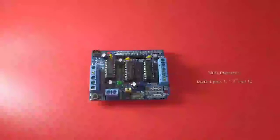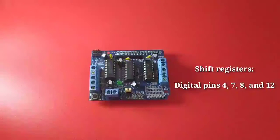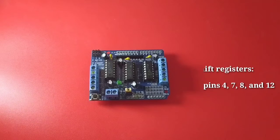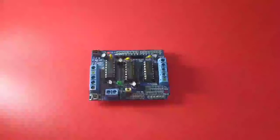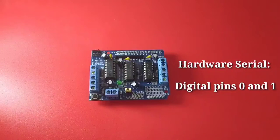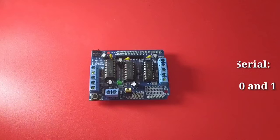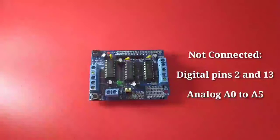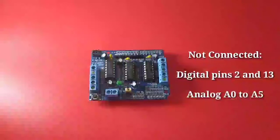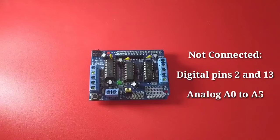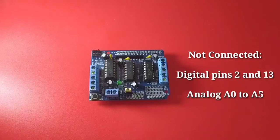While the chip registers is using the digital pins 4, 7, 8, and 12. The hardware serial is still connected to digital pin 0 and 1, while the following pins are not connected and free to use: Digital pins 2 and 13, and the analog A0 to A5.